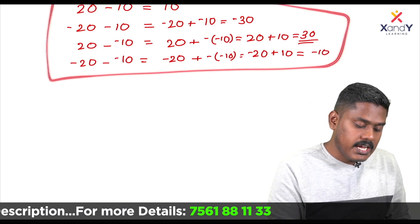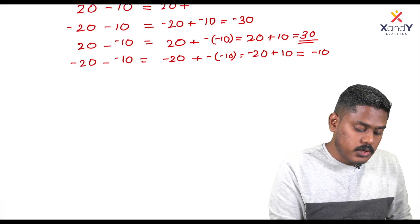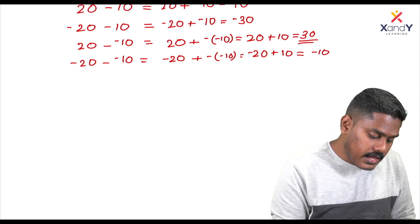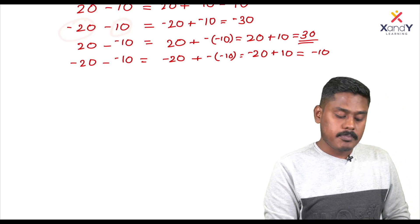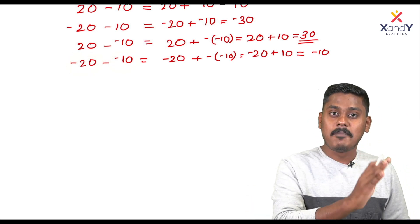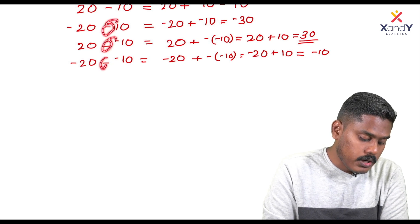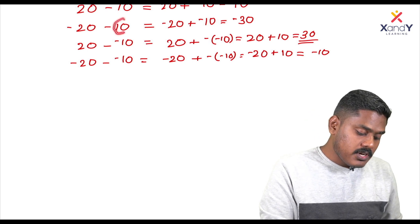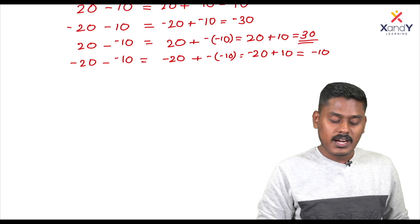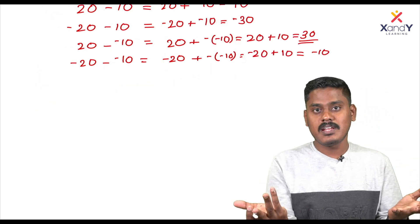This is subtraction. We discussed the first case: 20 minus 10 is 10. In subtraction, we convert the operation using the sign rule: negative negative is positive, and minus minus becomes plus. This is the addition rule and the subtraction rule. If you know this rule, these steps are easy. There is a simple rule to follow.